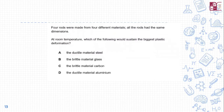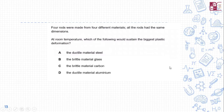Question 2: Four rods were made from four different materials — ductile steel, brittle glass, brittle carbon, and ductile aluminum — all with the same dimensions. Which would sustain the biggest plastic deformation? Brittle materials break easily and cannot sustain plastic deformation. Between steel and aluminum, aluminum is relatively better at sustaining strain, so the ductile material aluminum is the answer.